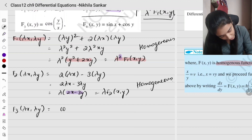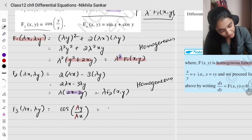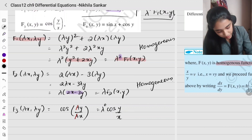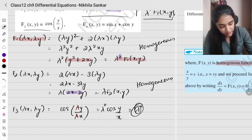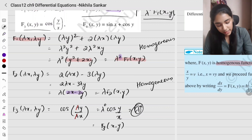Third example: f3(x, y) = cos(y/x). Substituting lambda x and lambda y gives cos(lambda y / lambda x). The lambdas cancel, leaving cos(y/x) = lambda⁰ · f3(x, y). So this is homogeneous of degree 0.